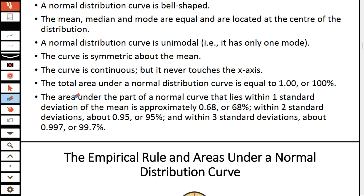We also have the empirical rule and the area under normal distribution curves. The area under the normal curve that lies within one standard deviation of the mean is approximately 0.68. Within two standard deviations, we have a probability of 0.95, and within three standard deviations, we have a probability of 0.997.